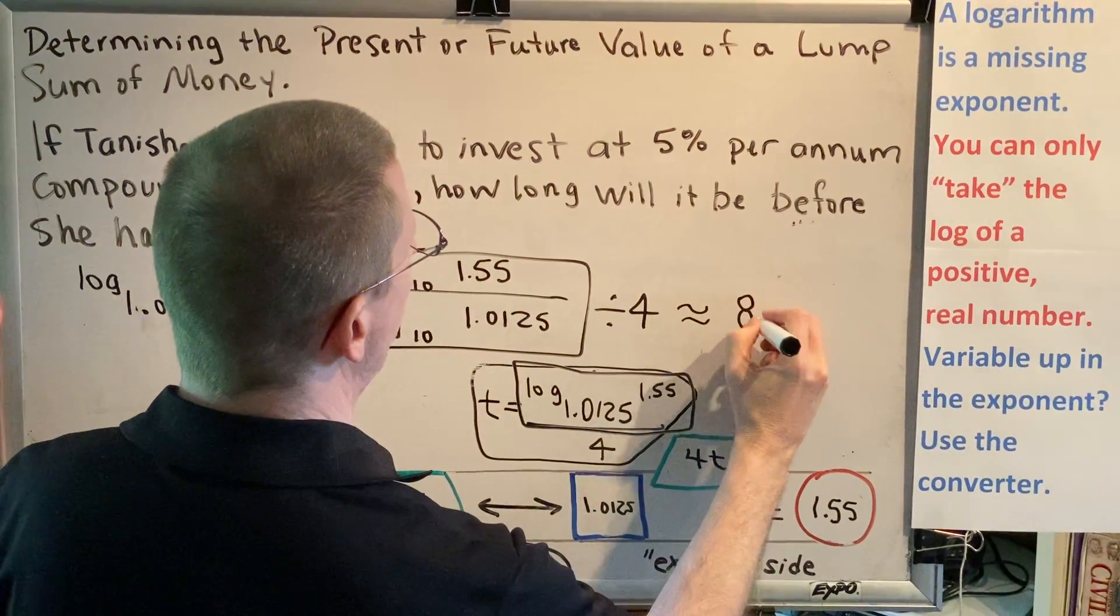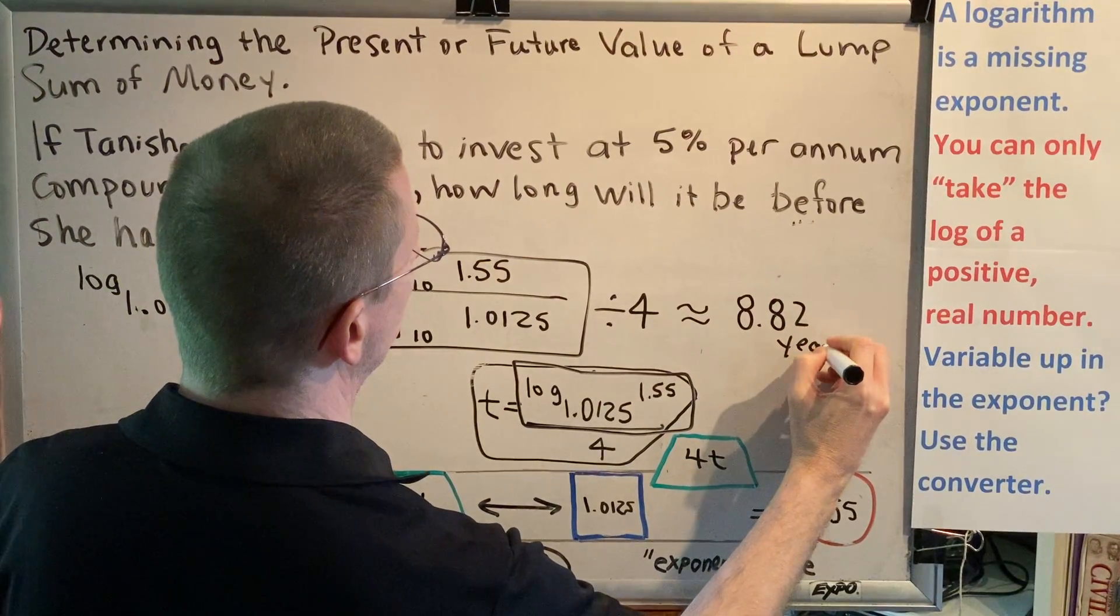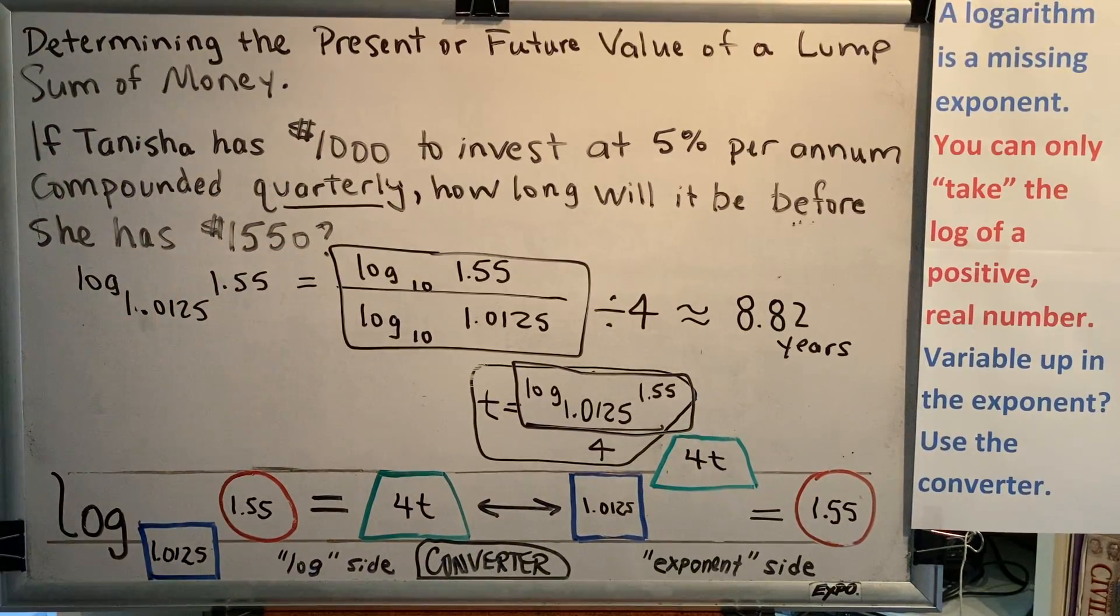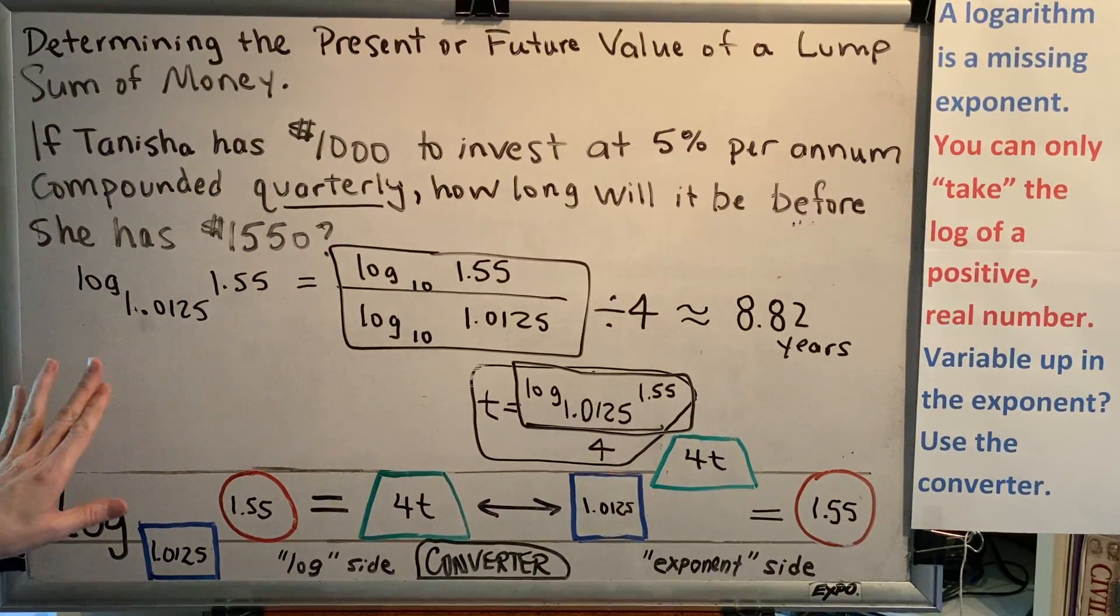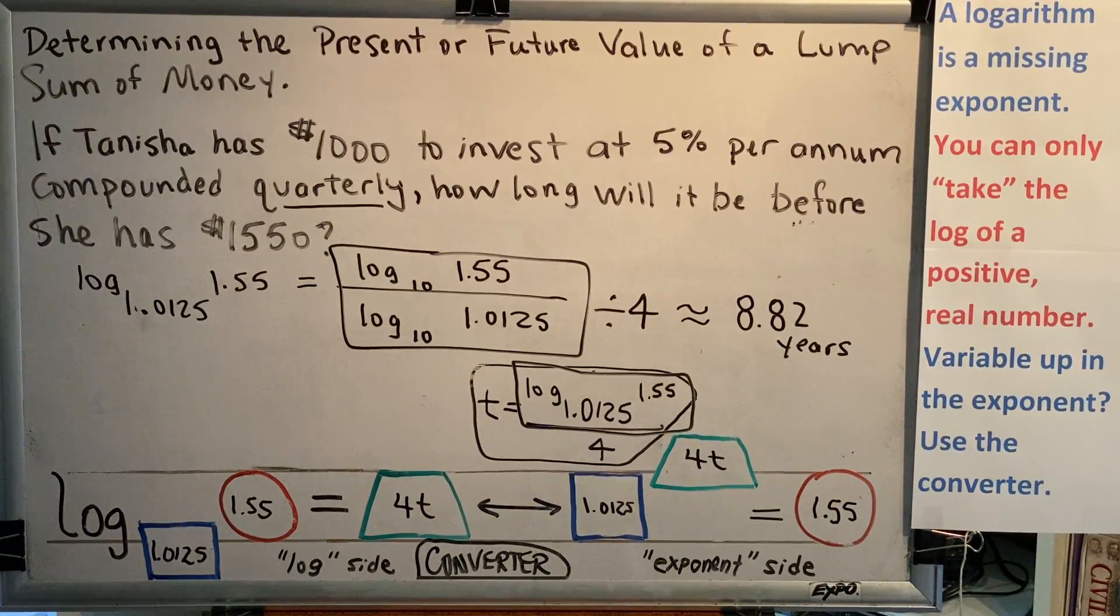It will take approximately 8.82 years for Tanisha to turn her $1,000 into $1,550 by investing it with this particular account where it's compounded quarterly at 5% per annum.